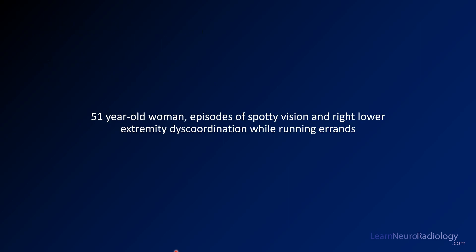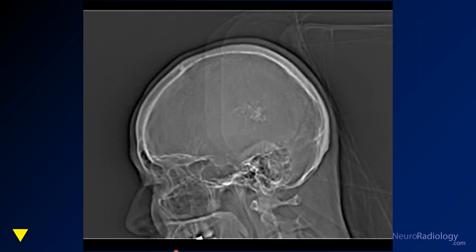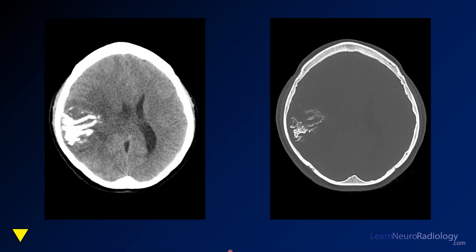We'll start with a case of a 41-year-old with vision changes and lower extremity discoordination. This is a scout image from a CT. You can see there's something in the center here where it should not be, so you want to be attuned to that on the actual CT images.